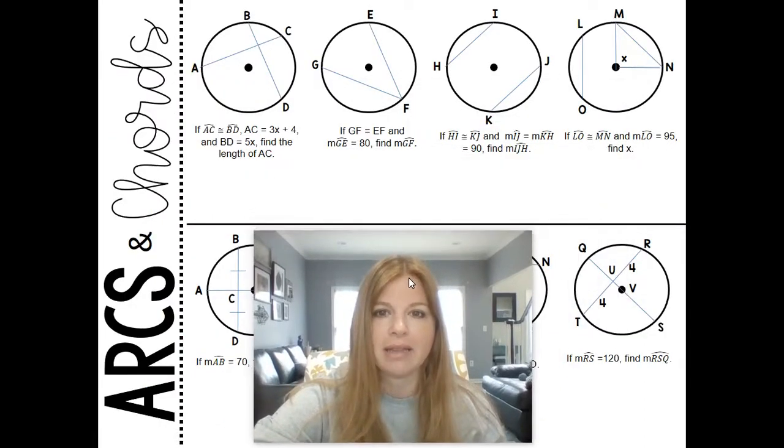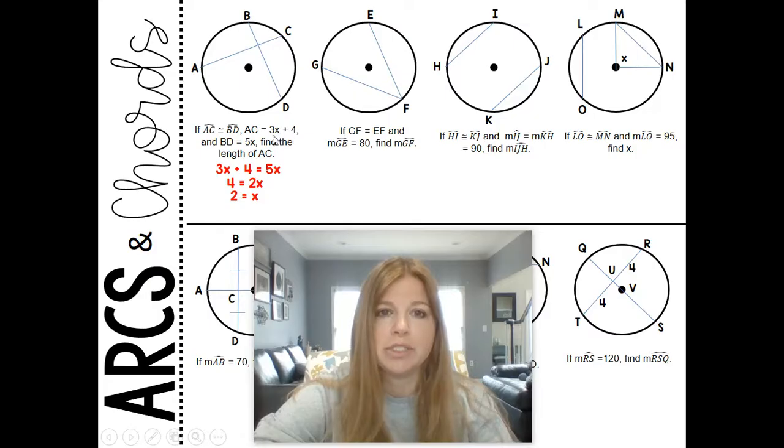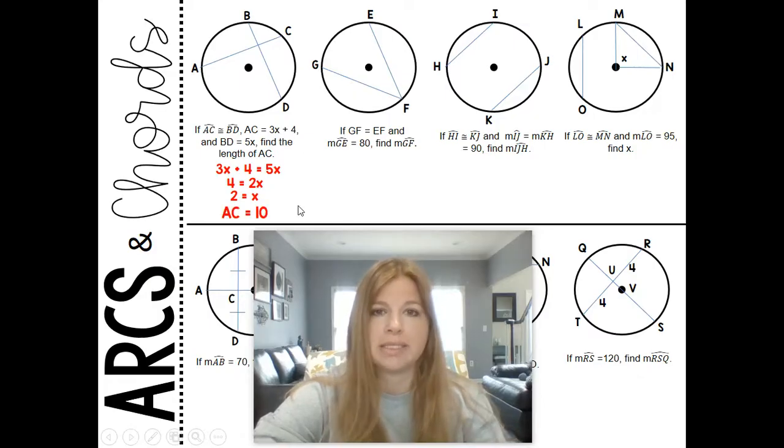Alright, let's take a look. These are all about congruent chords and arcs. First one: if arc AC is congruent to arc BD, and segment AC has a measure of 3X plus 4, and segment BD has a measure of 5X, find the length of AC. Well, if these two arcs are congruent to each other, then their chords are congruent to each other. So that means I would set 3X plus 4 equal to 5X. And if I do that and solve this basic equation, I end up getting X equals 2. Now, AC is equal to 3 times 2 plus 4, so AC has a value of 10.